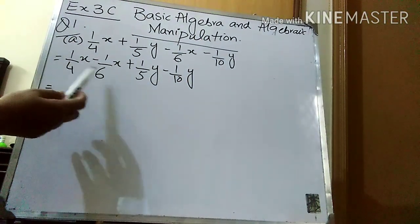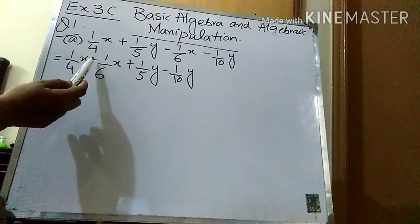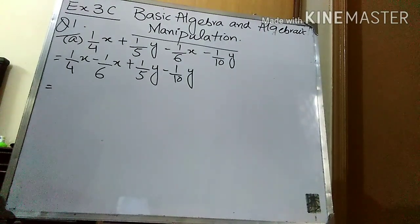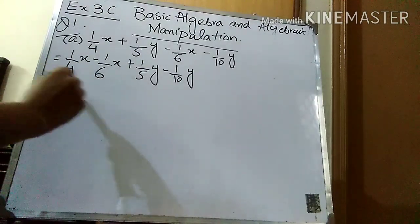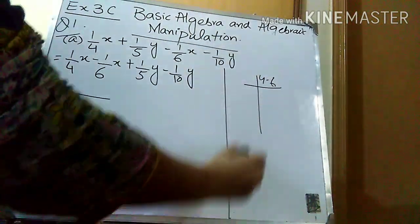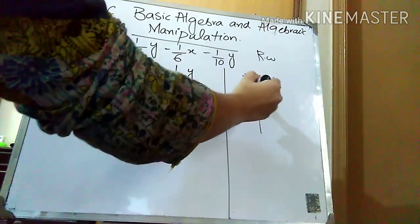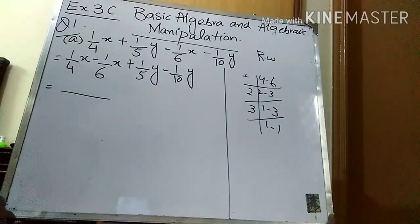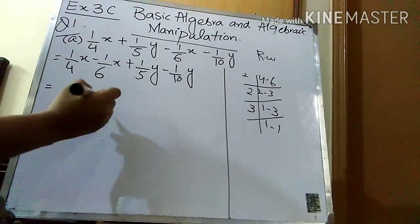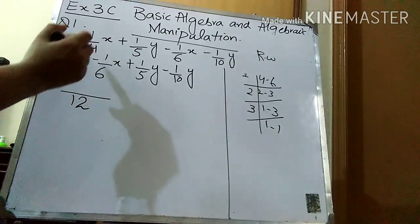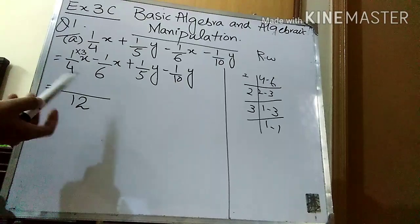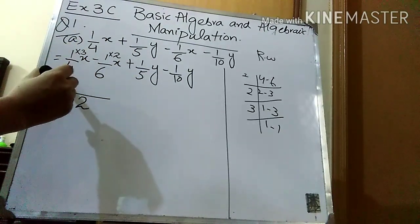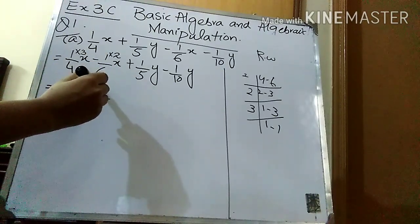Now I'm going to solve it. First I will solve the x terms. These are fractions and in between there is a minus sign, so I have to take the LCM of the denominators 4 and 6. The LCM is 12. Which times 4 is 12? It's 3 times — I'll multiply the numerator with 3. Which times 6 is 12? It's 2 times — I'll multiply the numerator with 2. So: 3x − 2x.